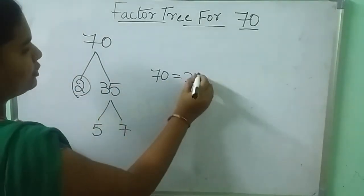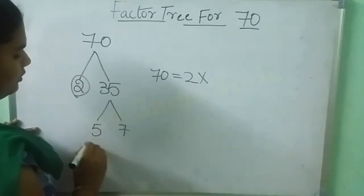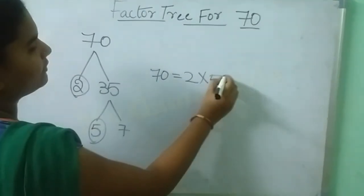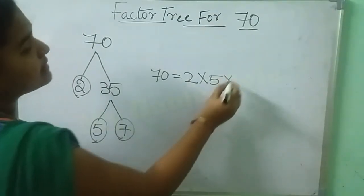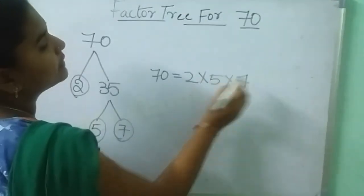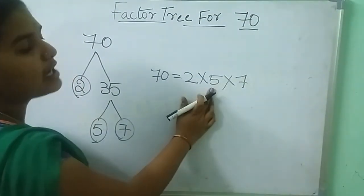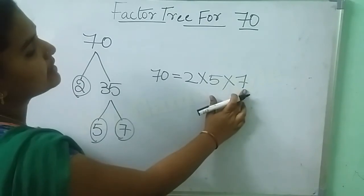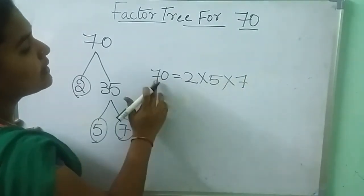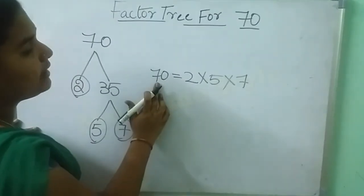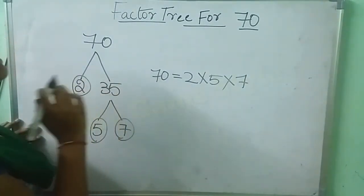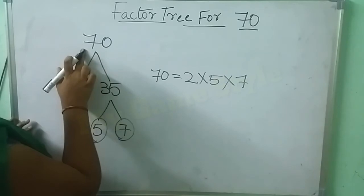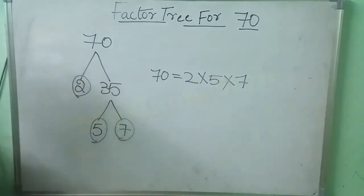2 into 5 into 7. 2 5s are 10, 10 7s are 70. So this is how we need to do the factorization of 70.